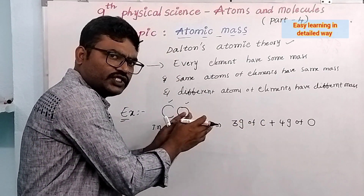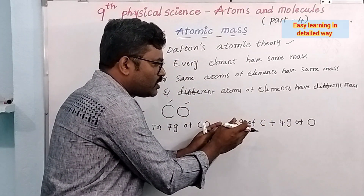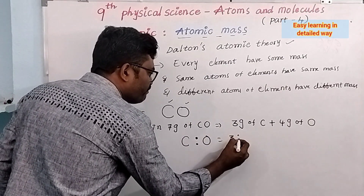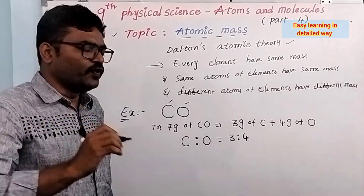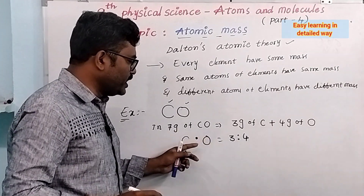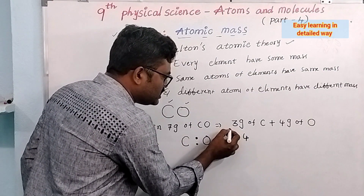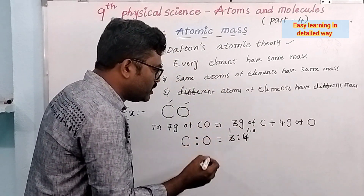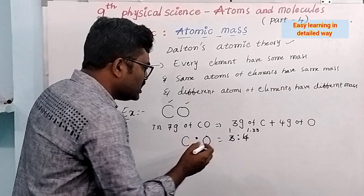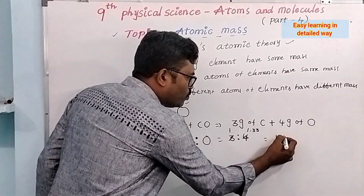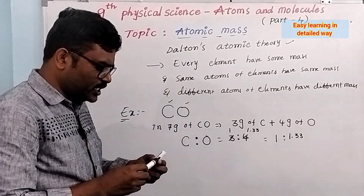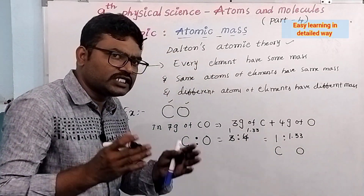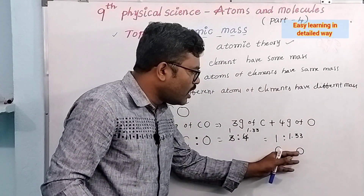This is a fixed ratio — the ratio between carbon and oxygen is 3 is to 4 by mass. If you simplify this, the ratio between carbon and oxygen is 1 is to 1.33. Which means the simplest ratio is carbon 1 part, oxygen 1.33 parts.